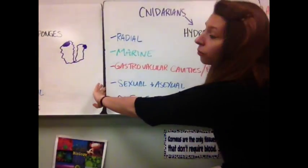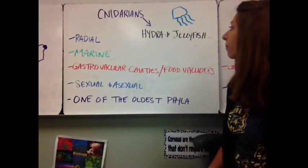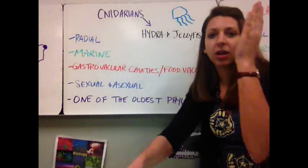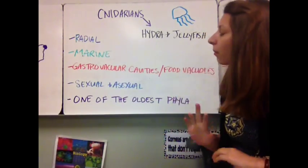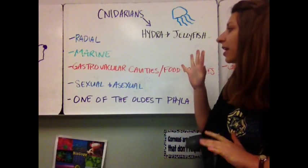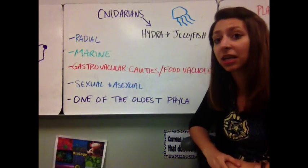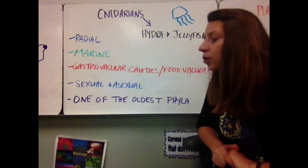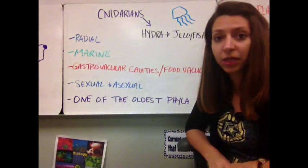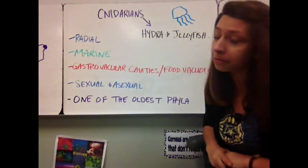Moving on to the Cnidarians — these guys are kind of cool. These include the hydra and the jellyfish. They have radial symmetry, which means we can draw several lines through the center and get equal parts. They're marine — they live in the ocean. They have gastrovascular cavities as well as food vacuoles to help digest, because there's not a lot to these guys. They have both asexual and sexual reproduction. The hydra can bud off of itself and reproduce asexually — it's kind of cool. And they're one of the oldest phyla, so they're a little bit less evolved than some of the others we'll be looking at.